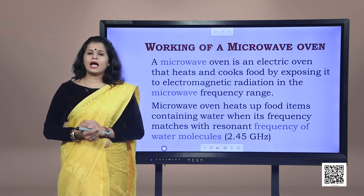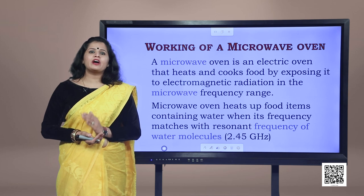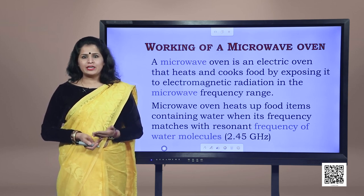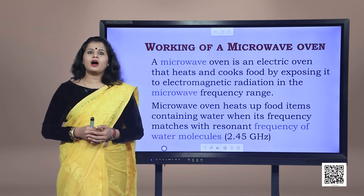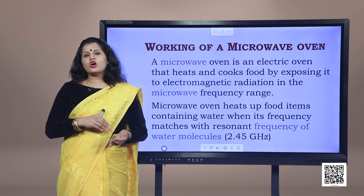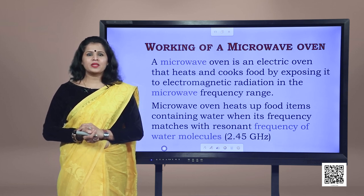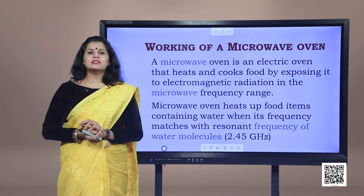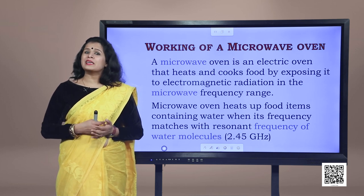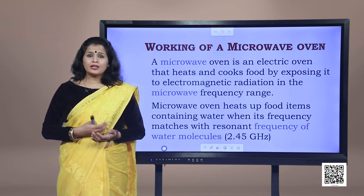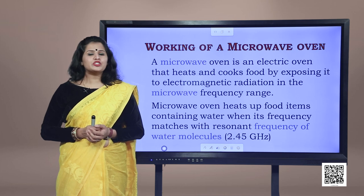Water molecules share their energy with the neighboring food molecules, thus heating the food up. The basic principle of a microwave oven is to generate microwave radiation of appropriate frequency in the working space of the oven where we keep our food. This way energy is not wasted in heating up the vessel. A question for viewers: can we use metal utensils in a microwave oven? The food kept in the oven is heated, but the vessel is not as hot as the food. Viewers should look for the possible explanations of these questions.